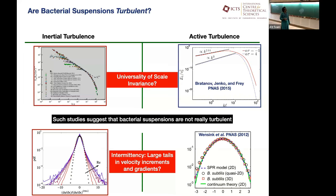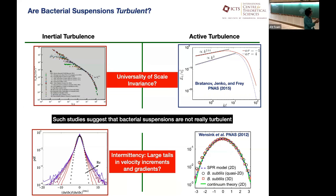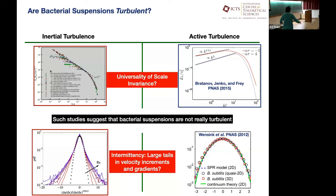What about bacterial suspensions? Early work — from Bratanov, Yenko, and Frye — showed that if you measure the energy spectrum for different activities, you get different exponents. That doesn't happen in turbulence — whatever the Reynolds number, you always get the same exponent. And in a 2012 paper, they measured the velocity gradient of bacterial suspensions and found everything collapses to a Gaussian — no large tails, no intermittency. So these studies would suggest that active suspensions with bacteria are certainly not turbulent.